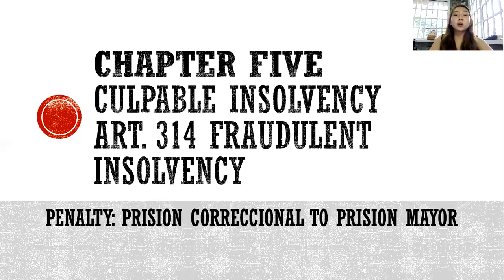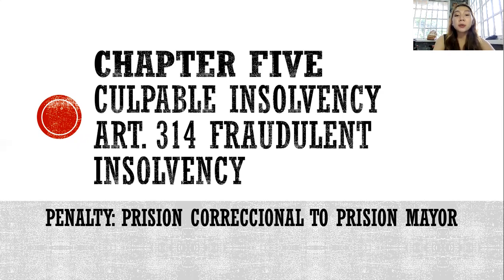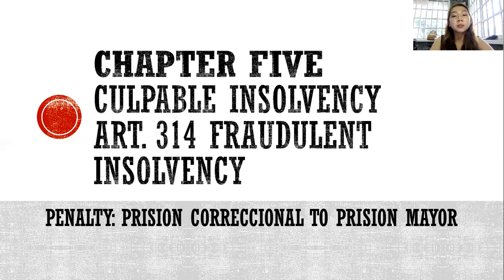Next is Chapter 5 or culpable insolvency, which includes Article 314 or fraudulent insolvency. Any person who shall abscond with his property to the prejudice of his creditors shall suffer the penalty of prision mayor if he is a merchant, and prision correctional in its maximum period to prision mayor in its medium period if he is not a merchant.